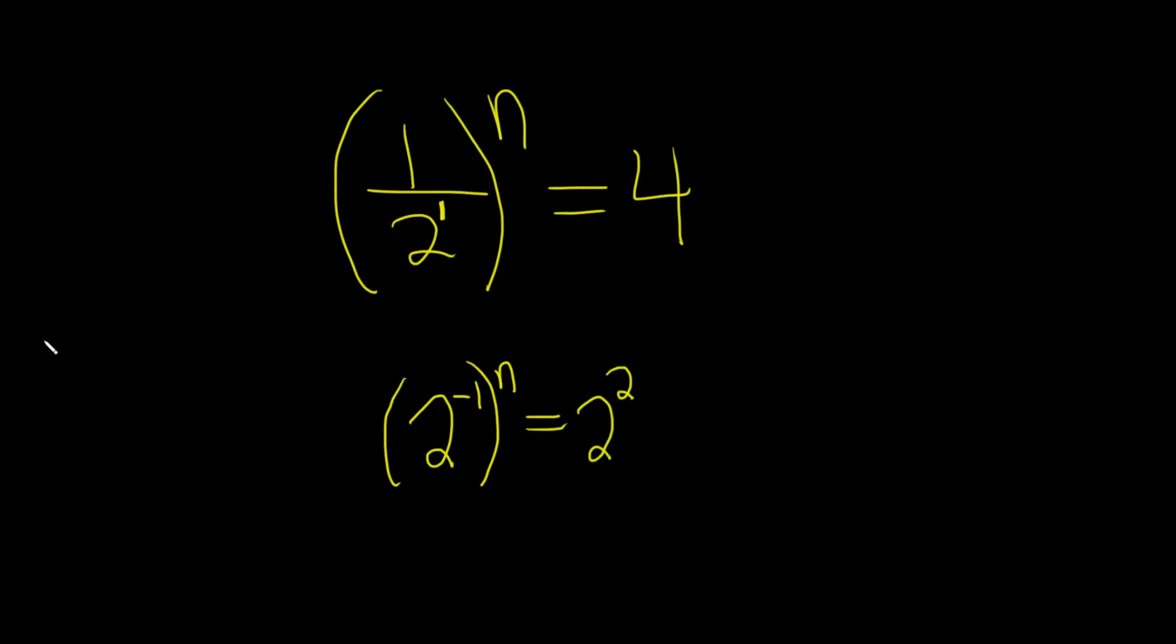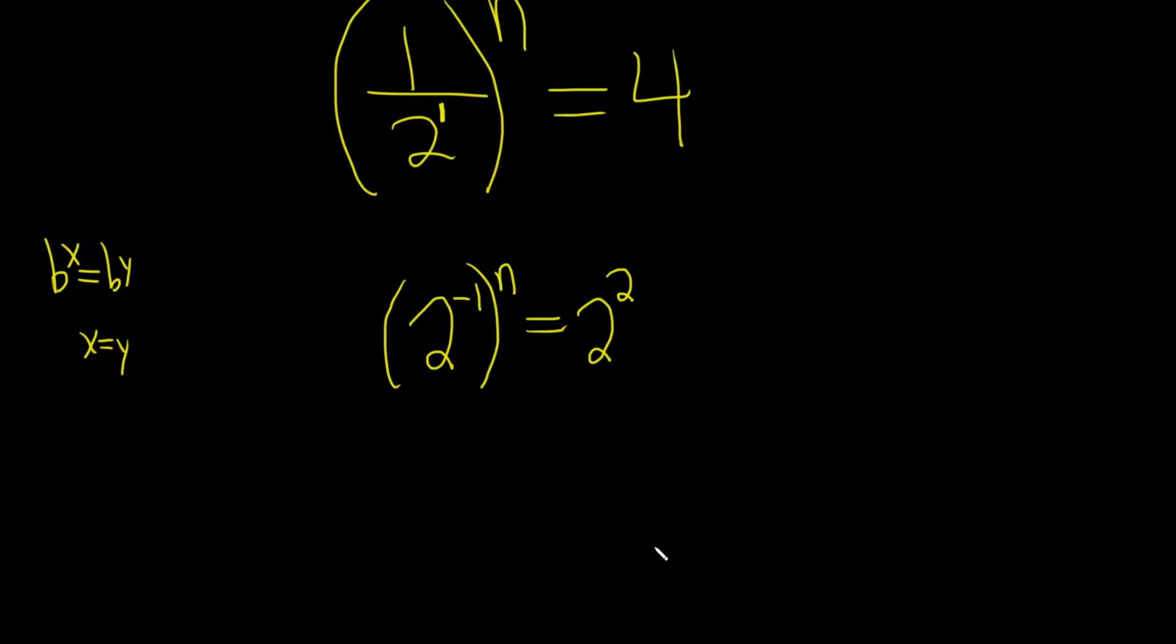Almost there, right? Our goal is to have the same base on both sides, something like this: b to the x equals b to the y. If we have this, then we can drop the bases and set x equal to y. So we're almost there. The next step is going to be to use properties of exponents.